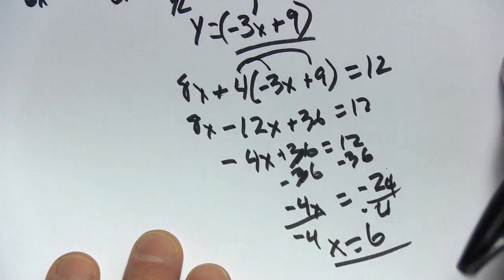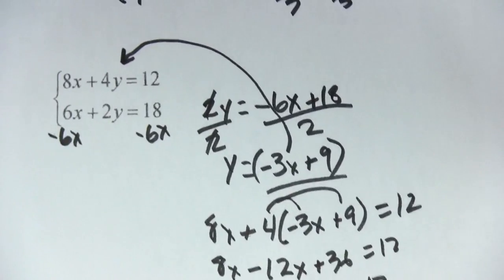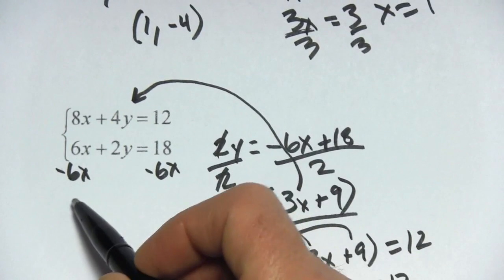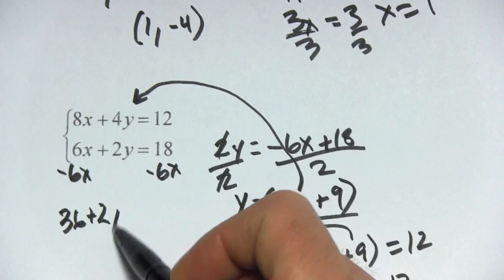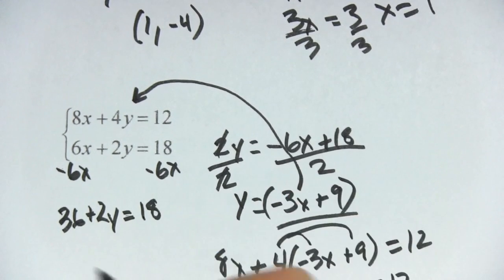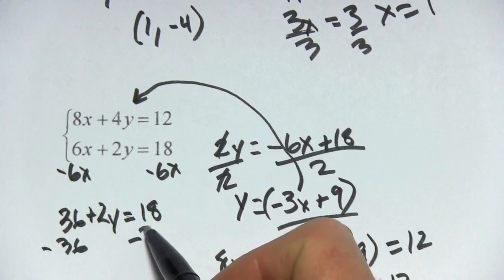So there's the first part of our answer. Let's go ahead and take this 6 and plug it back in. Well, let's put it in up here. So 6 times 6 would be 36 plus 2y equals 18.